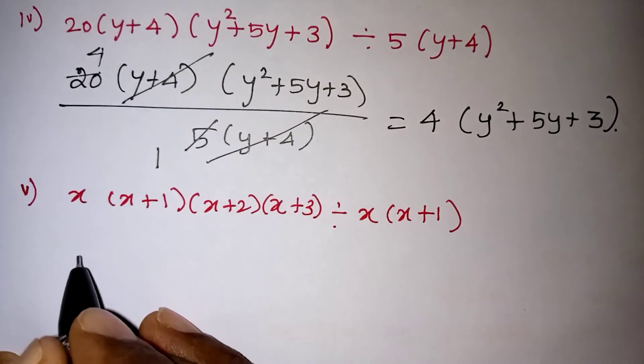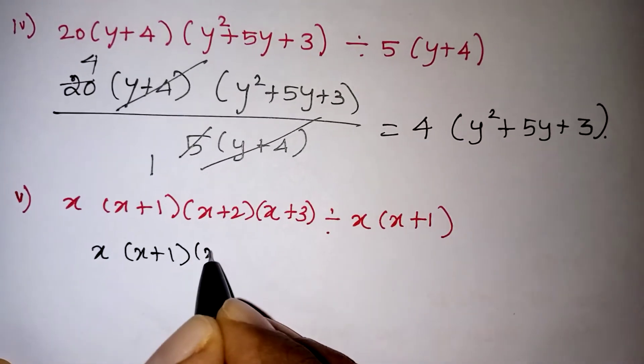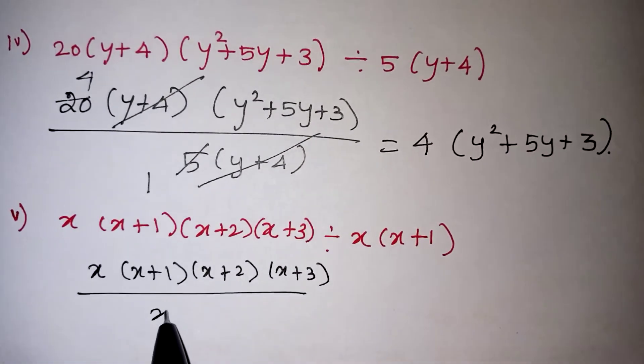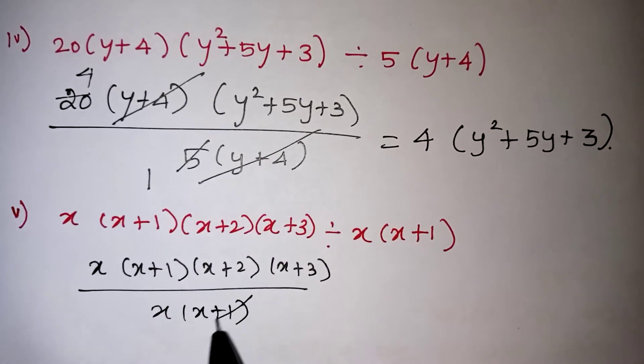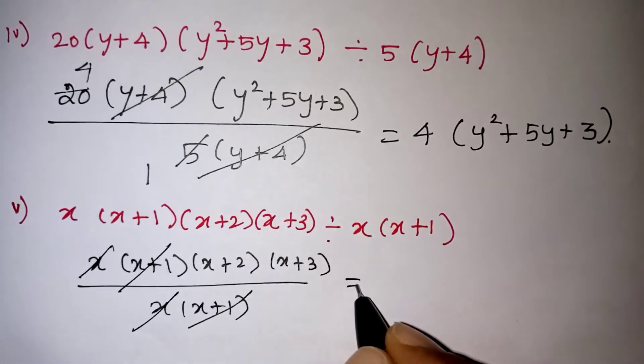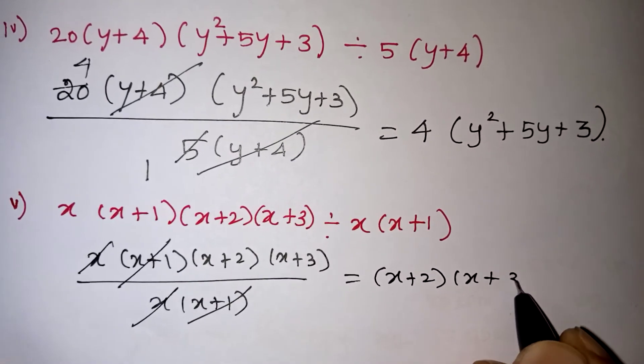Look at one more problem. Here we have x(x + 1)(x + 2)(x + 3) as a numerator, denominator we have x(x + 1). So (x + 1) and (x + 1) will get cancelled, x and x also will get cancelled, so the remaining terms are (x + 2)(x + 3), that is your final value.